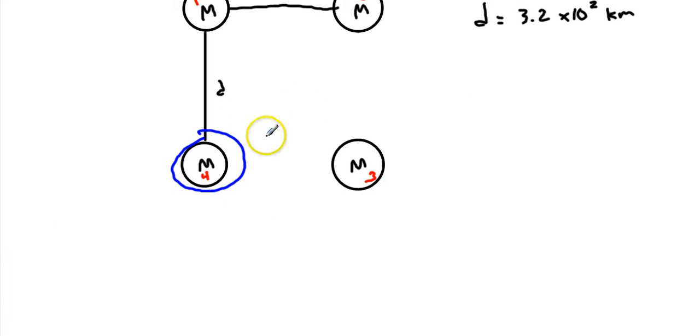And we're going to start by taking a look at object number 4. Now object 4 has three other objects pulling on it, so its free body diagram looks something like this. There's the force of gravity from object 1, there is the force of gravity from object 2, and there is the force of gravity from object 3.